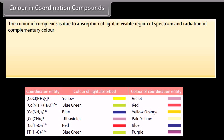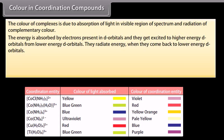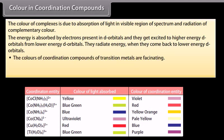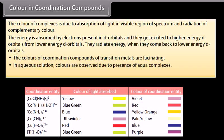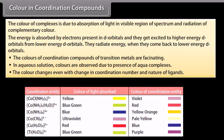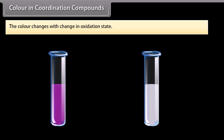Color in Coordination Compounds: The color of complexes is due to absorption of light in the visible region of the spectrum and radiation of the complementary color. Energy is absorbed by electrons in d orbitals, exciting them to higher energy d orbitals; they radiate energy when returning to lower energy d orbitals. In aqueous solution, colors are observed due to the presence of aqua complexes. The color changes with change in coordination number, nature of ligands, and oxidation state of the metal.